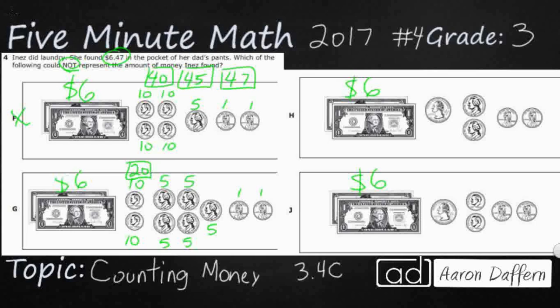And then we've got 46 and 47. So that looks good here. So $6.47 looks good for F and G. You notice they both have two pennies.